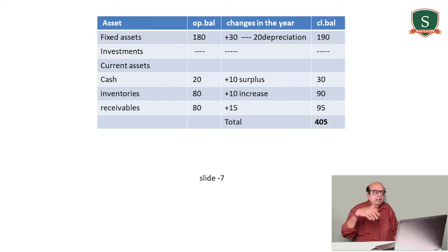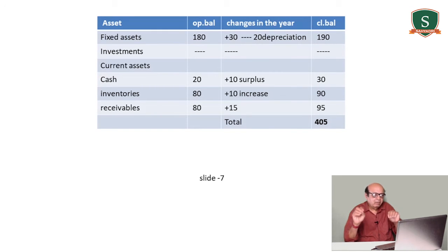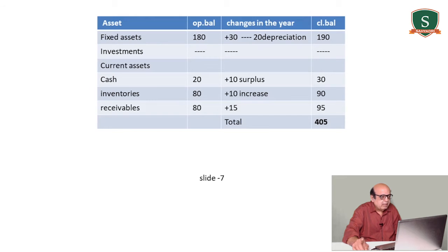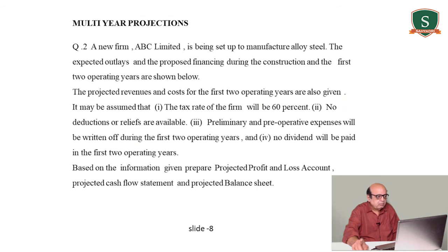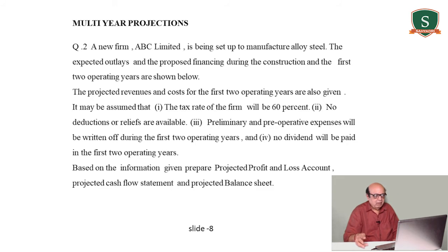Now moving to multi-year projections — two or more years. For this subject it is limited to two years. A new firm ABC Limited is being set up to manufacture alloy steel. The expected outlays and proposed financing cover three periods: construction period, first operating year, and second operating year. Projected revenues and costs for the two operating years are given. The tax rate is 60 percent.